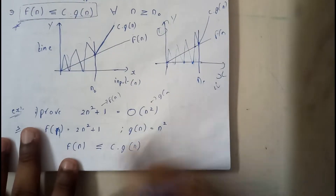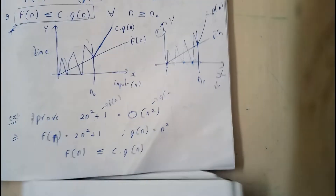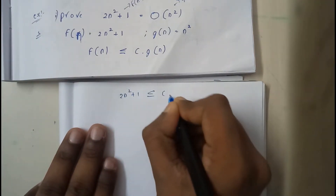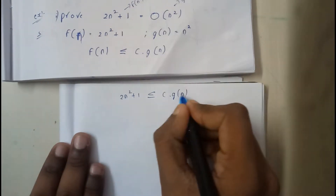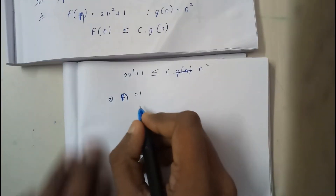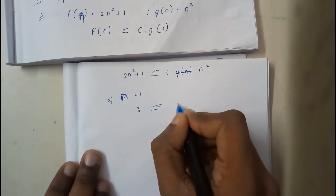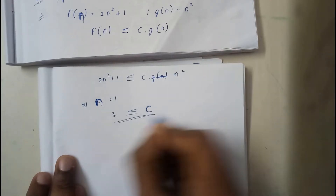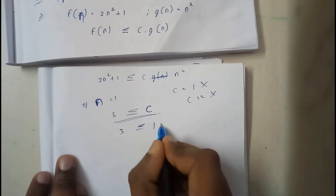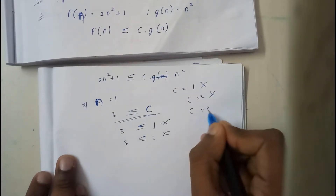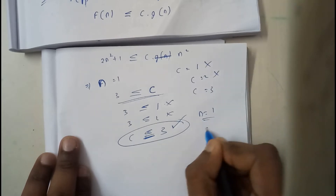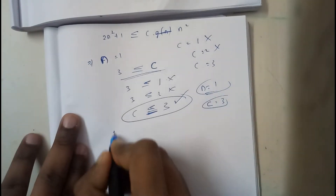Now let's write the equation: 2n² + 1 ≤ c·g(n), so c·n². Initializing n = 1, we get 3 ≤ c·1. So what value of c satisfies this? c = 1 gives 3 ≤ 1 — no. c = 2 gives 3 ≤ 2 — no. c = 3 gives 3 ≤ 3 — true. So c = 3 and n₀ = 1 are the values we obtained.